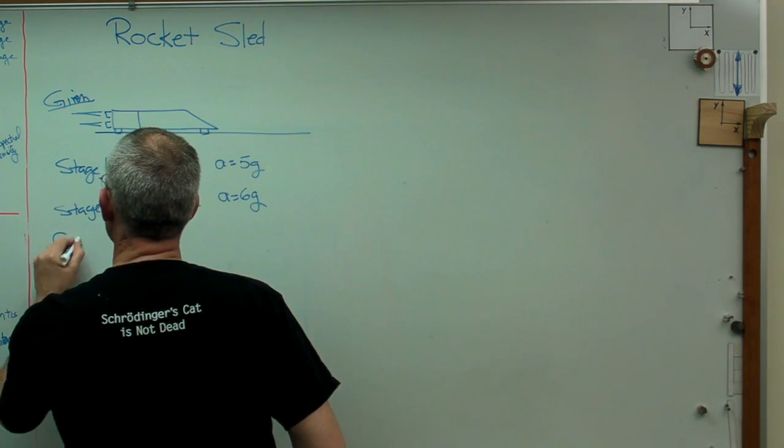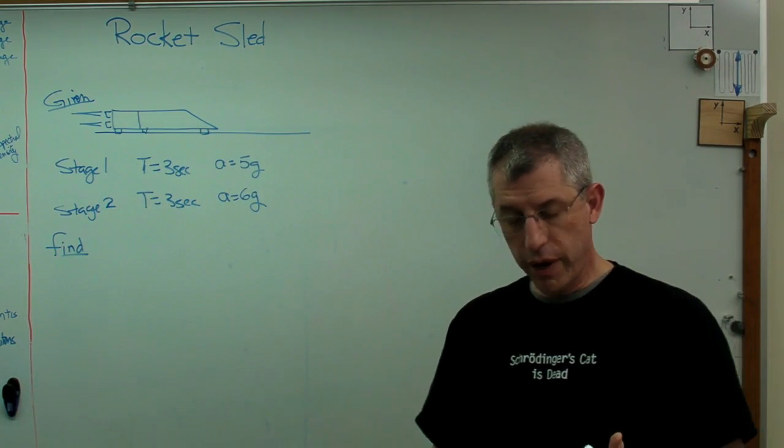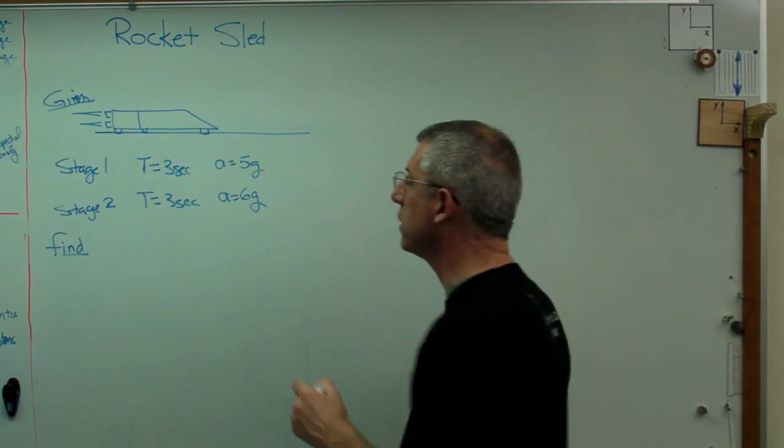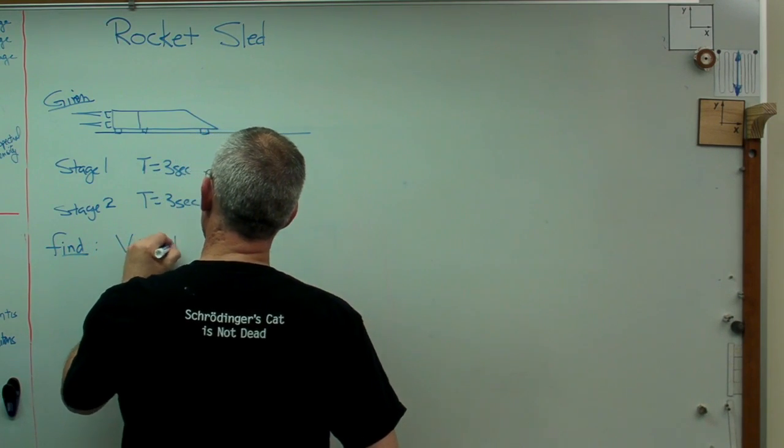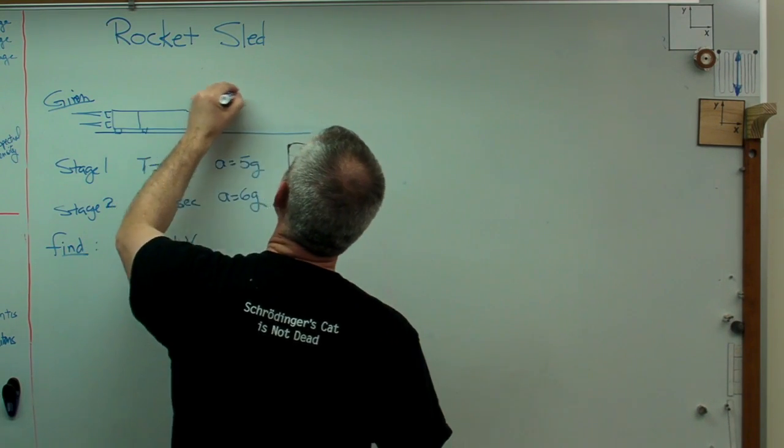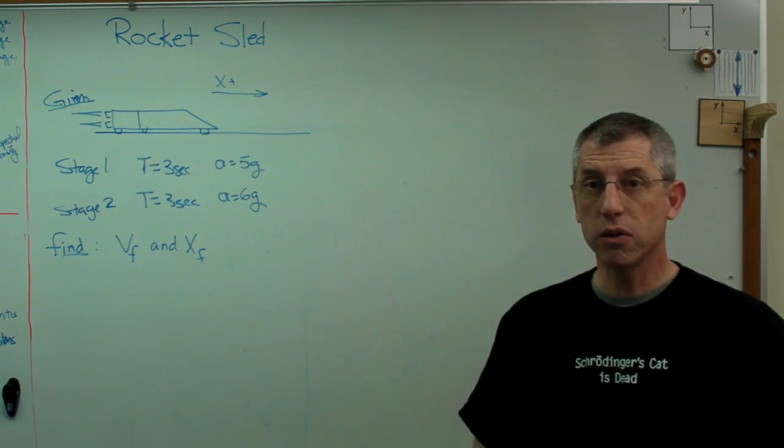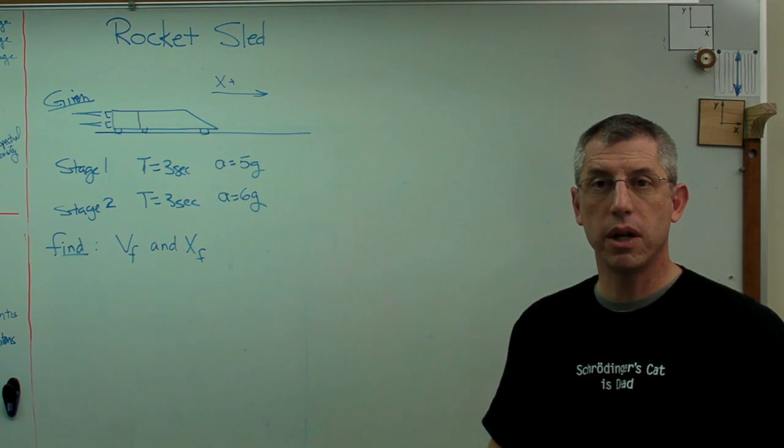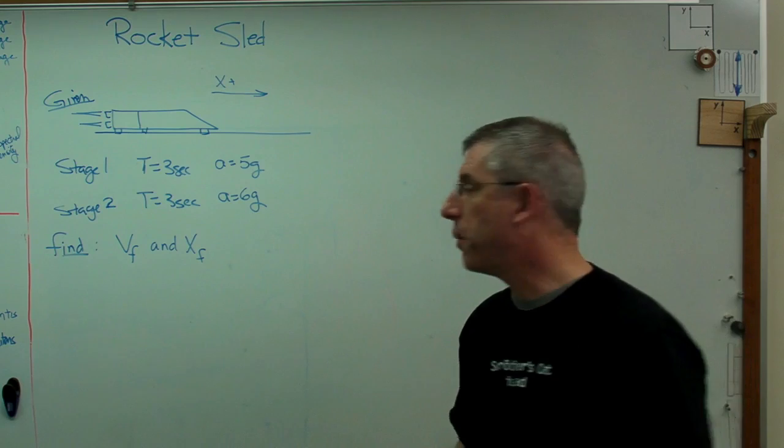And let's find some interesting stuff here. If I was running that test, I would want to know what my final velocity was and how much of the track I used up getting to that final velocity. So let's do this. Let's find V final and X final, where the X is going to be in that direction. So we'll find out how fast the sled's going when that motor burns out, that second stage set of motors, and how far it's gone when that second set of motors is burned out.